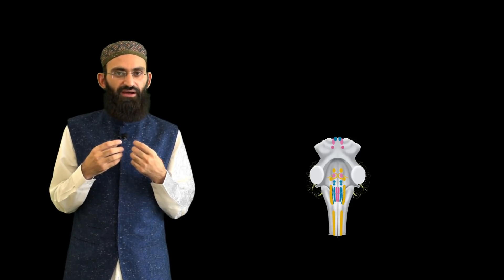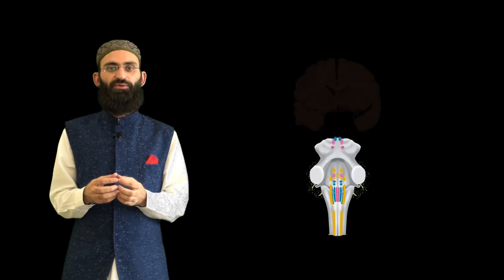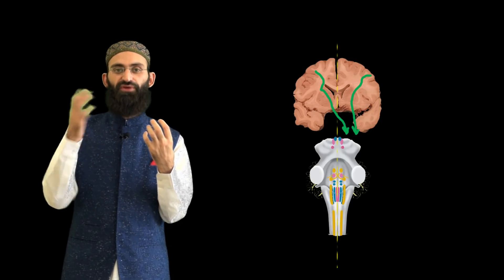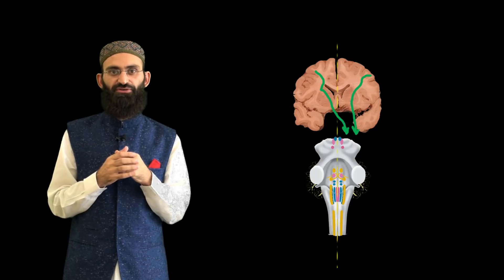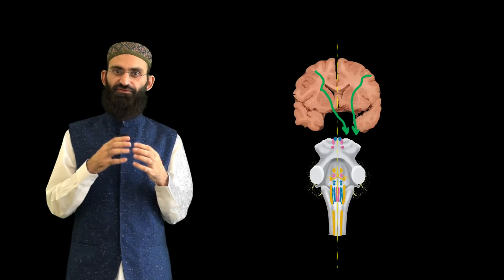Cranial motor nuclei, on the other hand, receive their innervation through corticobulbar fibers. Unlike spinal motor nuclei, cranial motor nuclei receive their upper motor neuron innervation from both sides, meaning one cranial motor nucleus gets its upper motor neuron supply from both right and left sides. So if there is damage to one side's corticobulbar fibers, a cranial motor nucleus will still receive its upper motor innervation from the other side.